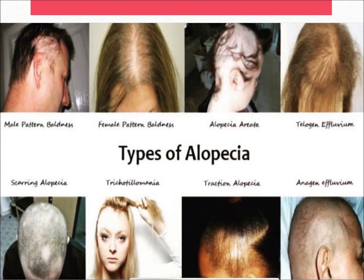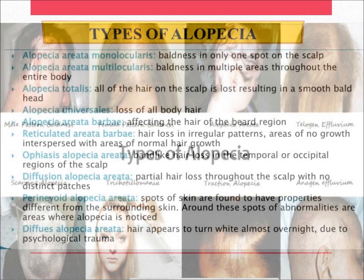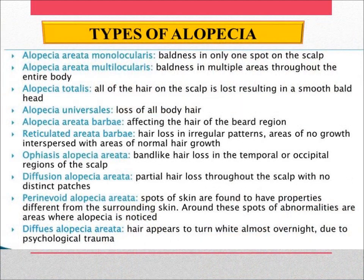Types of alopecia: there are many types — alopecia areata, alopecia totalis, alopecia universalis, reticulated areata, barbe, obvious alopecia areata, diffuse alopecia areata, perinevoid alopecia areata.